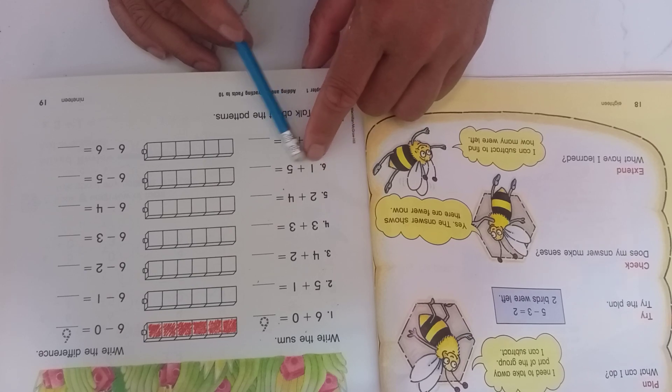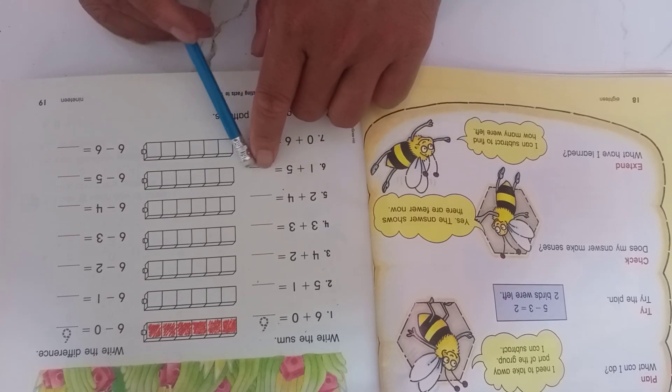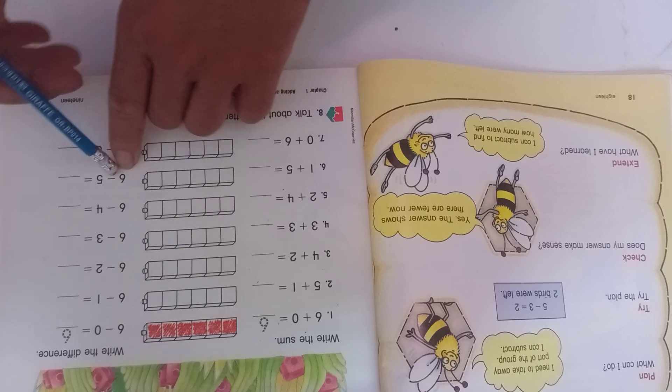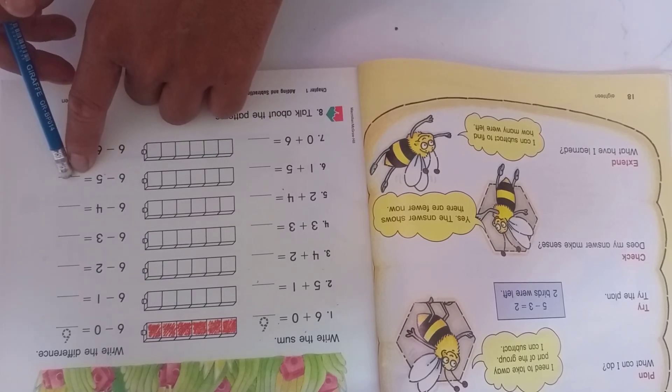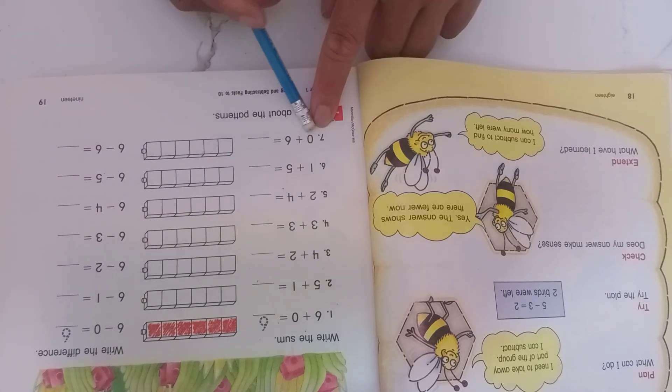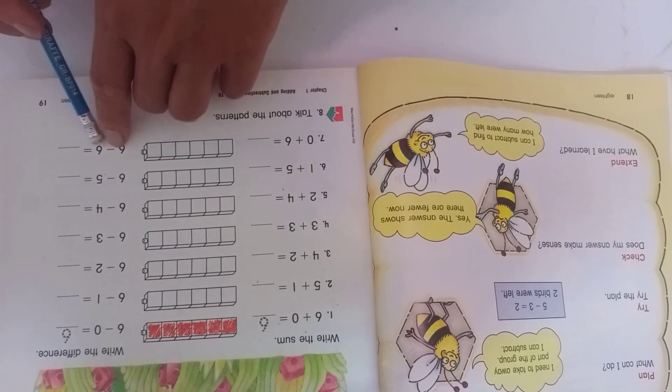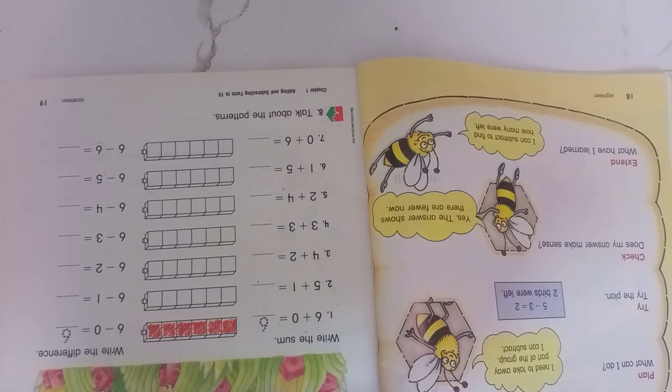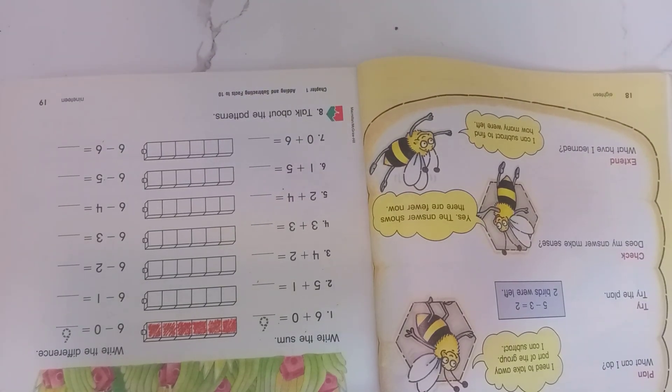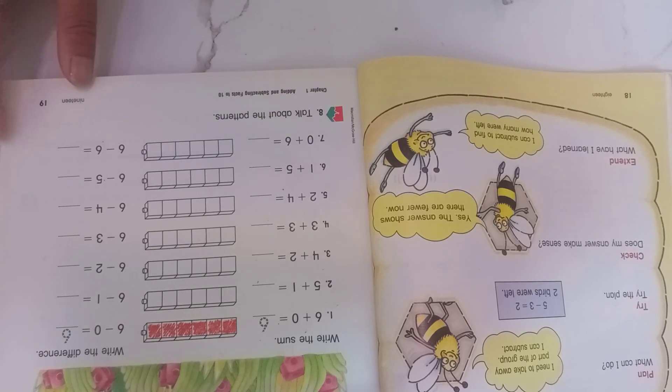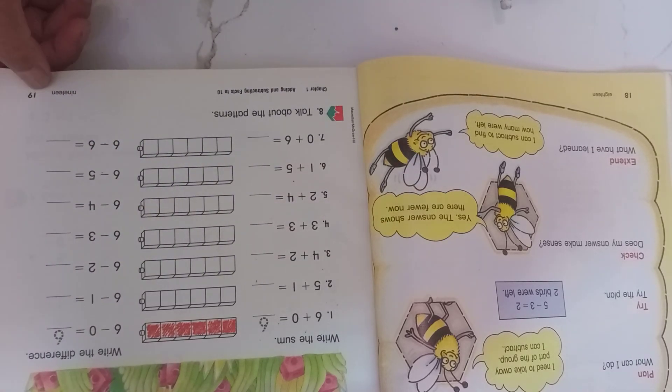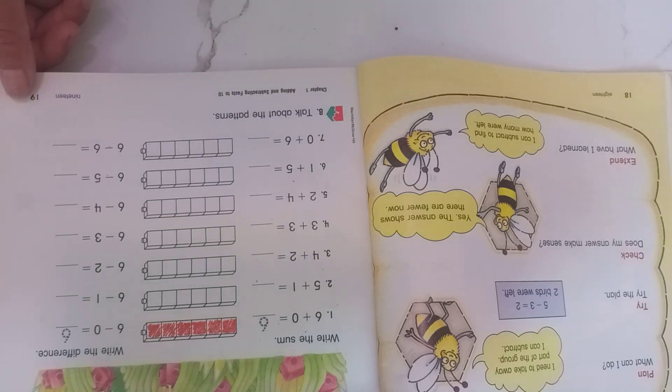Number six is one plus five equals six, and the difference is six take five equals one. Number seven is zero plus six equals six, and six take six equals zero. That's about the patterns. Finish page 19, and we'll continue on page 20. Goodbye, see you again. Bye bye.